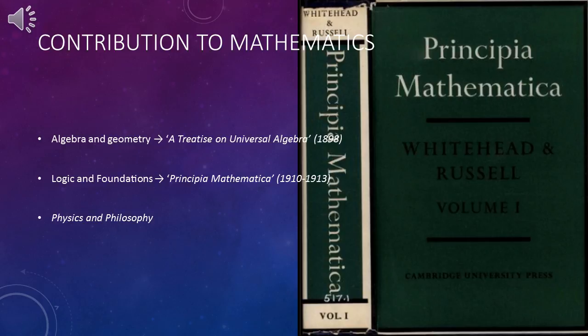Whitehead's mathematical work can be separated into three general areas. The first area, algebra and geometry, contains his writing in pure mathematics in his first book, A Treatise of Universal Algebra, published in 1898.